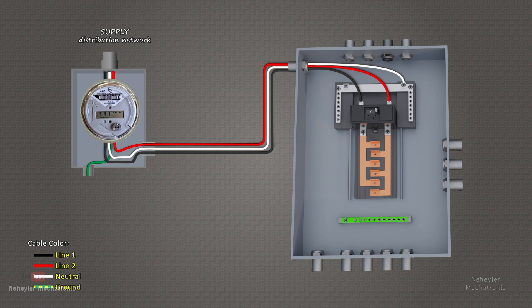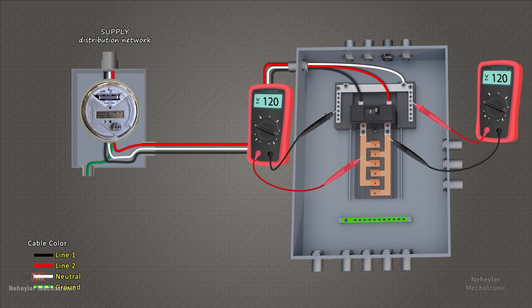If up to this point we make a measurement to see what voltage, we would have the following. If we measure the voltage between one of the live lines with respect to the neutral, we would have a voltage of 120 volts.